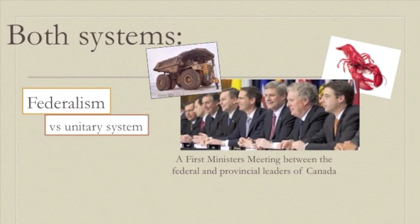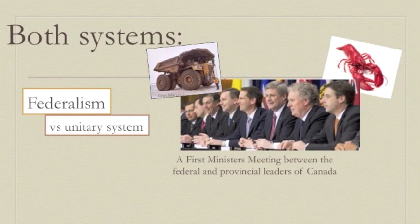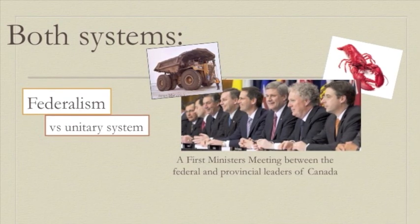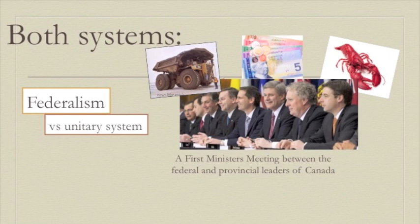Instead, we've established a federal system where the central government controls issues that affect everyone — like defence, currency, and international relations — while the regional governments control local issues like resources, roads, and education. These regional governments are the Canadian provincial and American state governments.